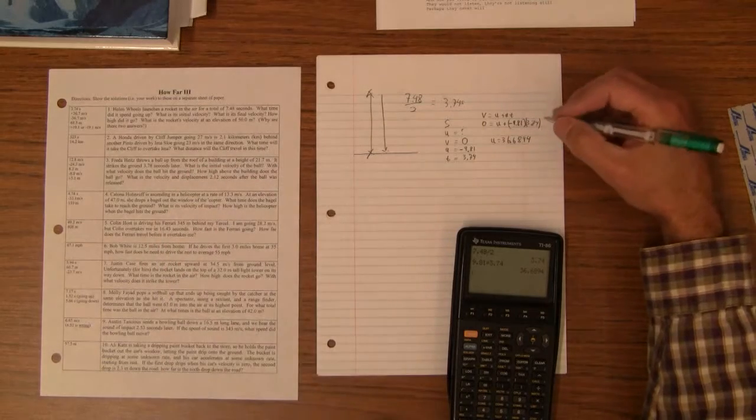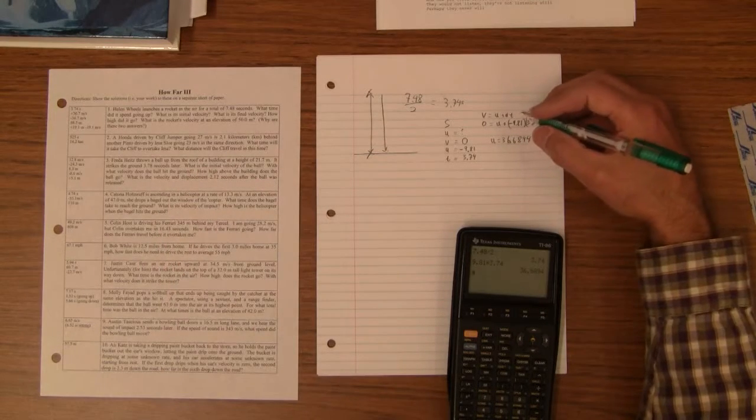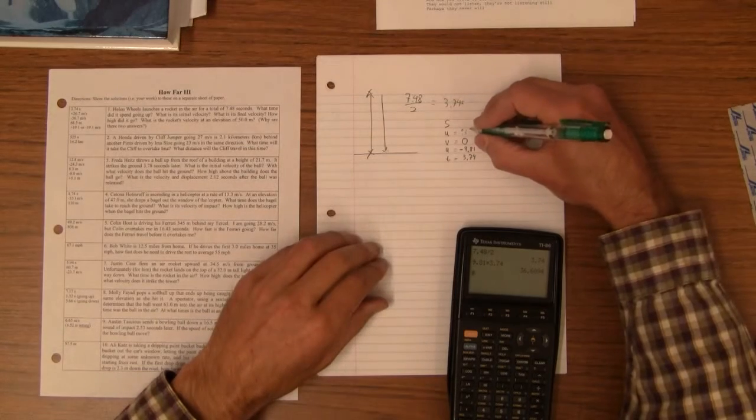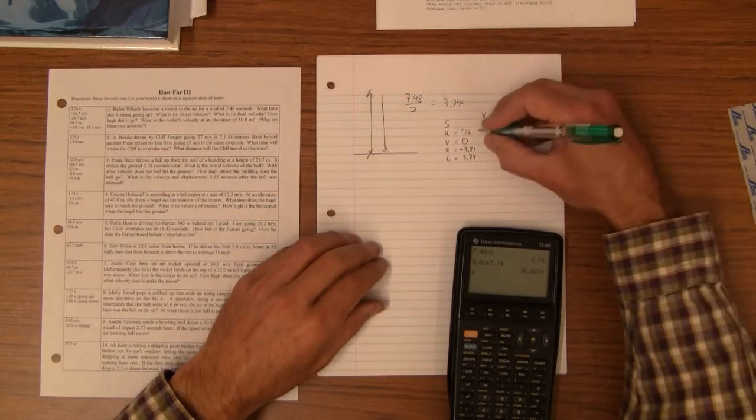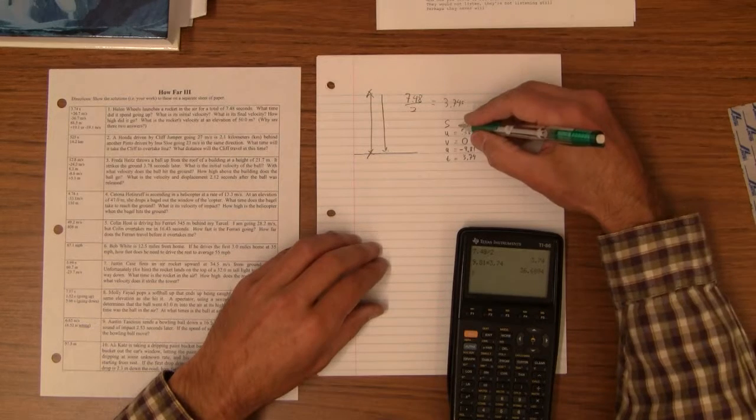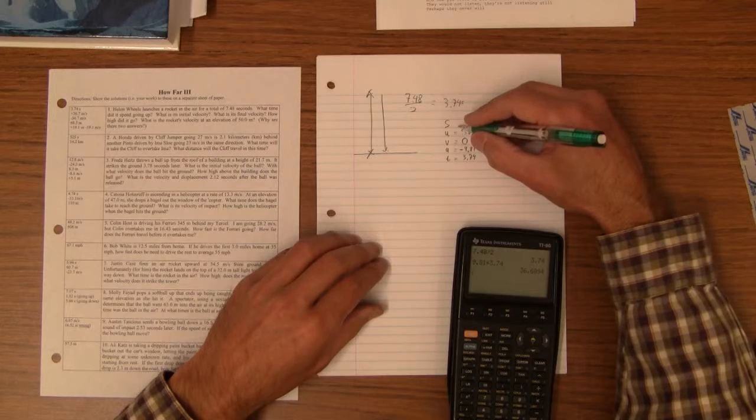At this point, you don't want to round that really. The answer is 36.7, but we're going to keep that whole thing there, 36.6894.